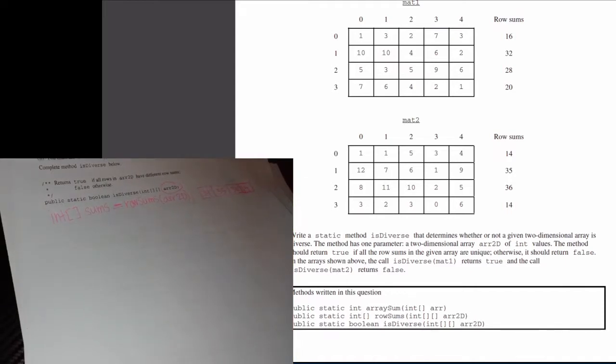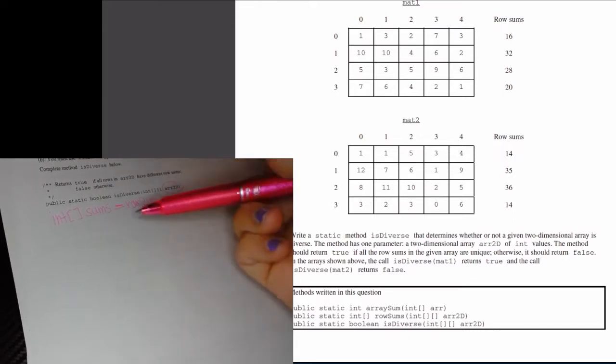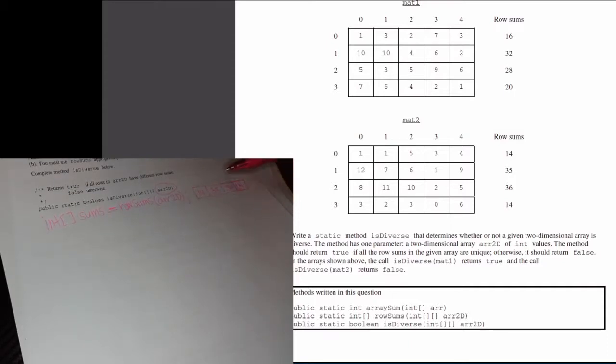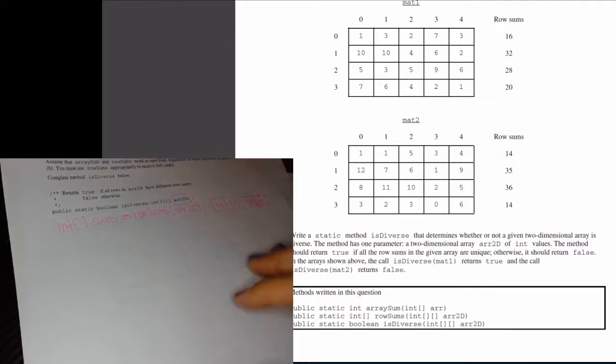Alright, so once I've done that, I want to iterate through each of the elements of sum and determine if any one of these elements equals another element within this. And if it does, we want to return false, that this is not a diverse array. If none of the elements match each other, we want to return true, that this is a diverse array.